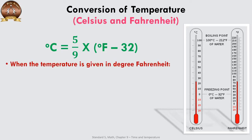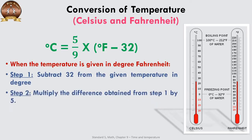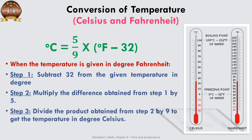When the temperature is given in degrees Fahrenheit: Step 1 — subtract 32 from the given temperature. Step 2 — multiply the difference obtained in Step 1 by 5. Step 3 — divide the product obtained in Step 2 by 9 to get the temperature in degrees Celsius.